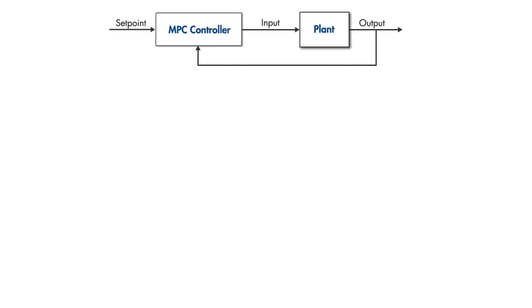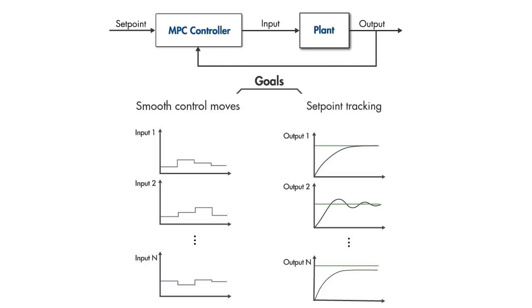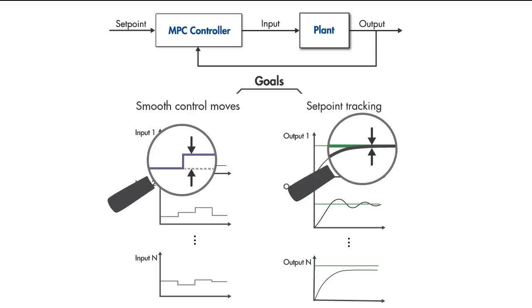Similarly, MPC has multiple goals. We want the outputs to track as close as possible to their setpoints. But at the same time, we want to have smooth control moves to avoid aggressive control maneuvers. The way to achieve a balanced performance between these competing goals is to weigh the input rates and outputs relative to each other.